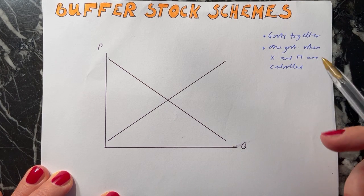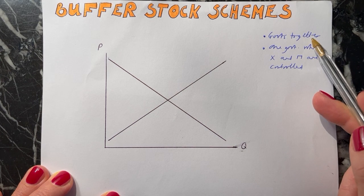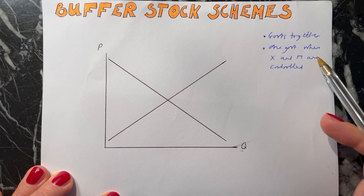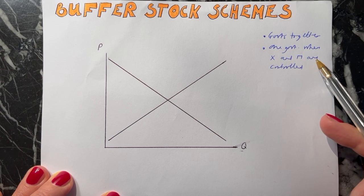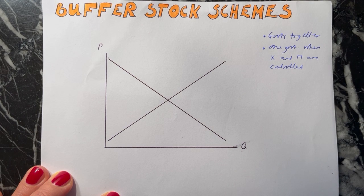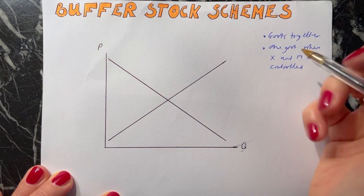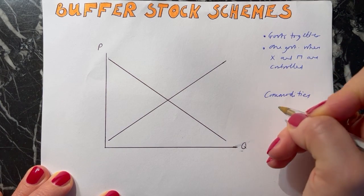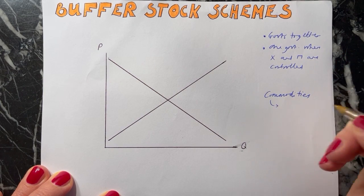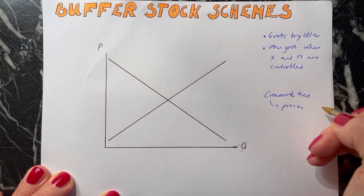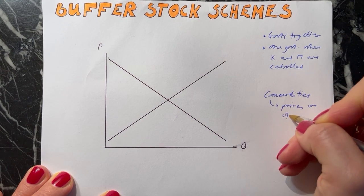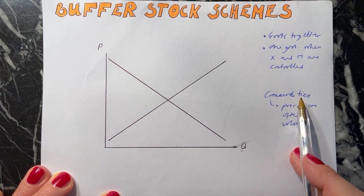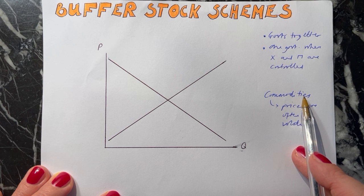A buffer stock scheme can be set up by governments working together - a number of governments - or it could be set up by one government where exports and imports of a certain product are controlled. Buffer stock schemes are generally operating for commodities, and the purpose of them is to address the fact that commodity prices are often volatile. We know that commodities have a world price - so for example cocoa or coffee.